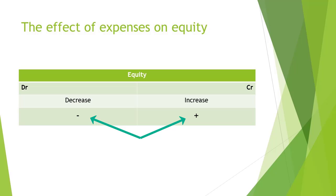For example, if an expense was recorded at a thousand rand, but it should have been recorded at 900 rand, then an entry of 100 rand on the credit side would have the effect on equity that the equity increases because the expense is decreasing.